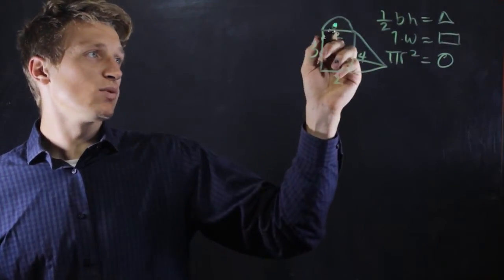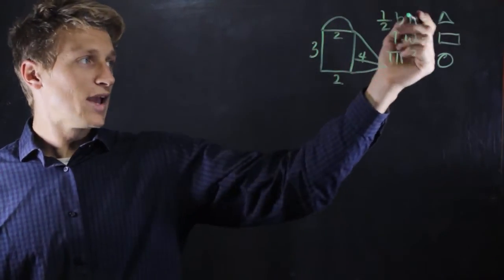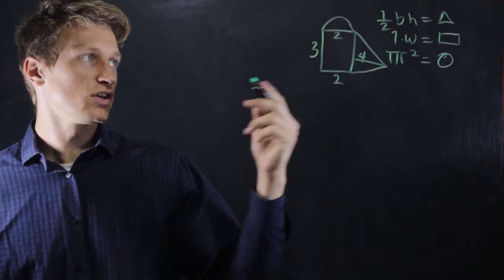And the area for a circle is pi times r squared. But this one, since it's half a circle, we're going to have to divide it by 2. So if we add all these together, we'll get the overall area for this irregular shape.